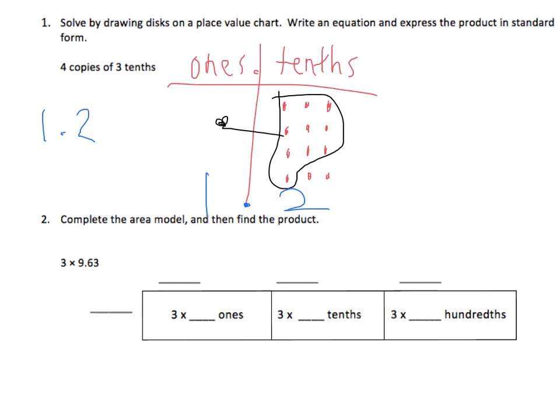Now to write the equation, I'm going to go back to what they gave me. I see that they asked for 4 copies of something. When they ask for copies, I know that I'm going to be multiplying. They wanted 4 copies of 3 tenths. So 3 tenths in standard form is 0.3. So as an equation, 4 times 3 tenths equals 1 and 2 tenths.